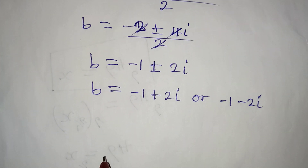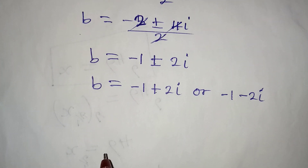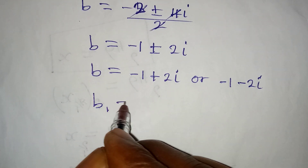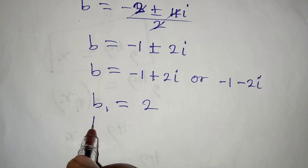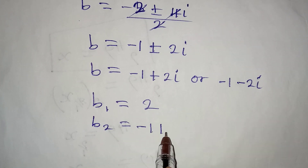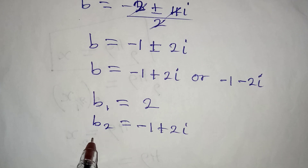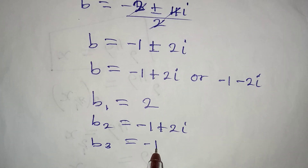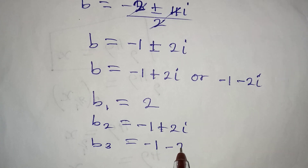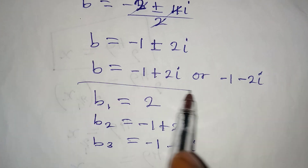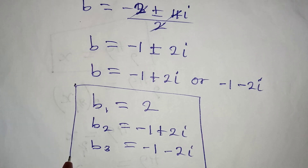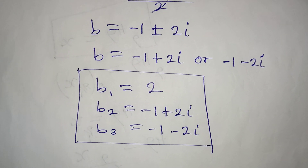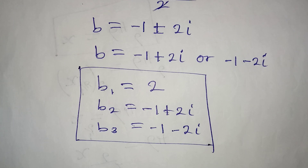Bringing the three values together: b1 equals 2, b2 equals minus 1 plus 2i, and b3 equals minus 1 minus 2i. These are the three values of b according to the equation, and we have solved it completely.